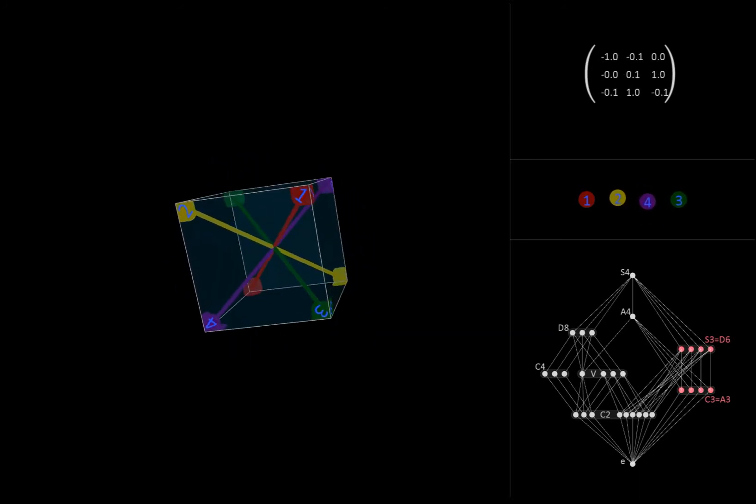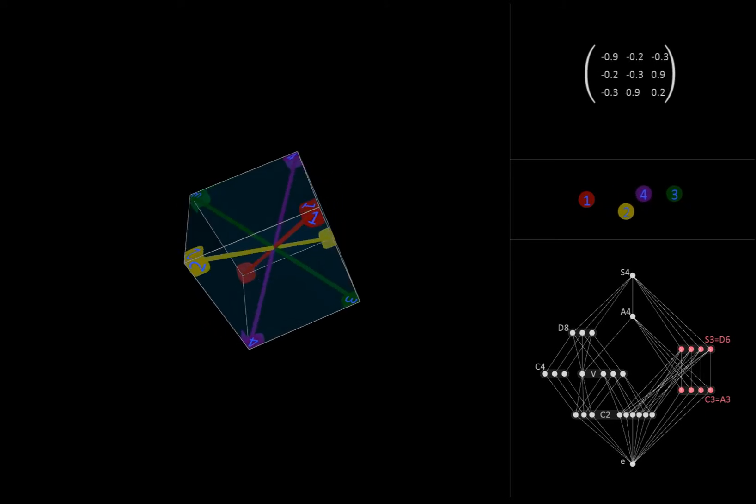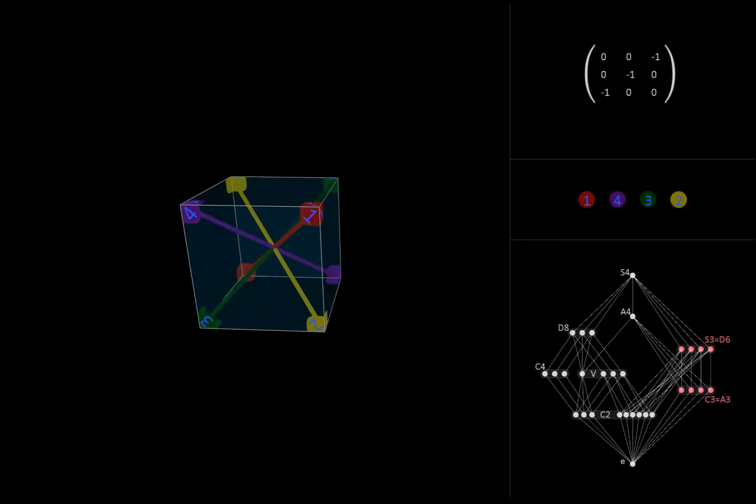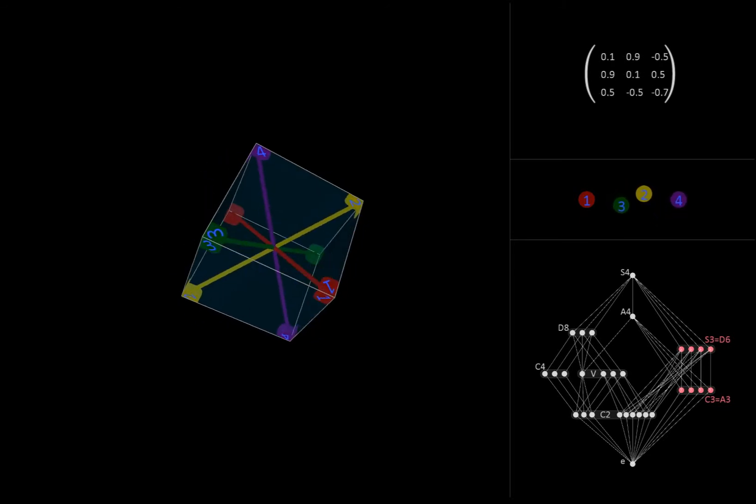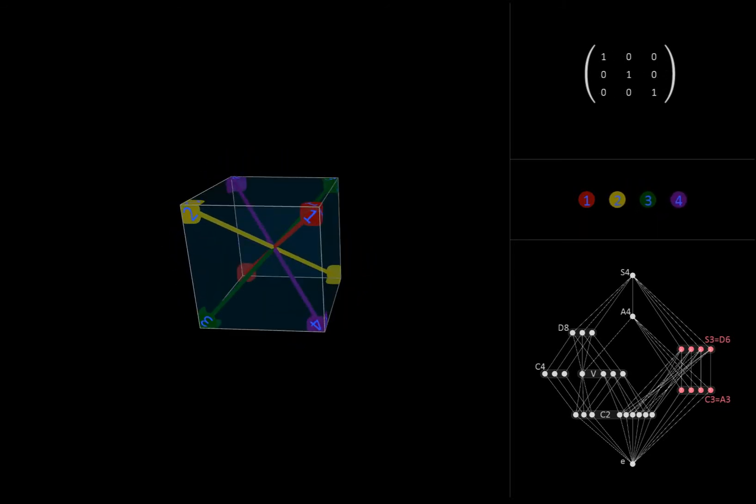Here is what its elements look like when we return to our original point of view. Note that we first generated this group by 180 degree rotations about two different axes, combinatorially by two cycle permutations. Now we've seen that we can also generate it by a combination of 120 and 180 degree rotations. In other words, a three cycle and a two cycle. This illustrates the fact that in almost all cases, there is more than one way to generate a group.